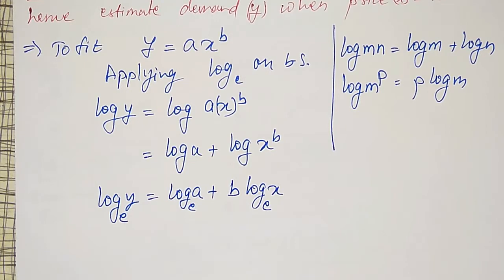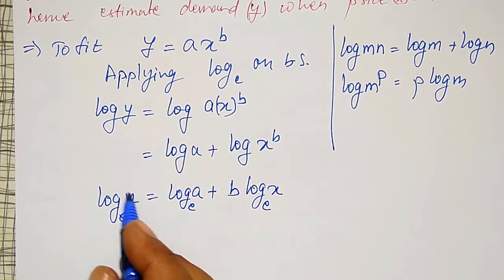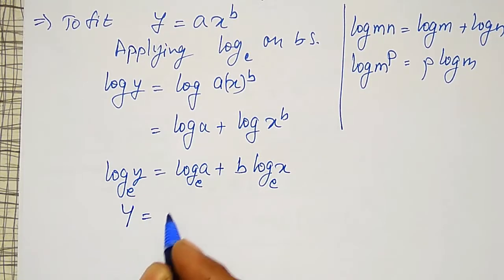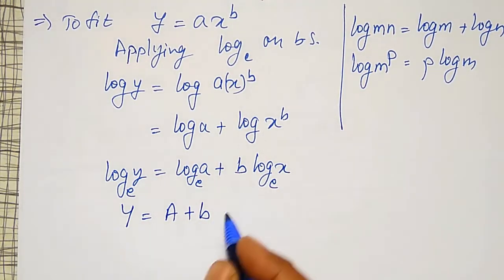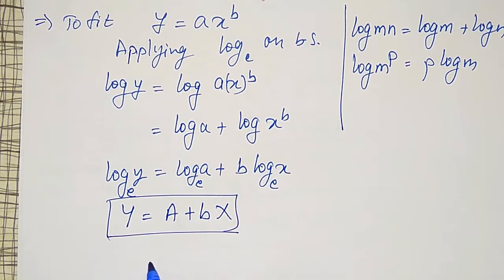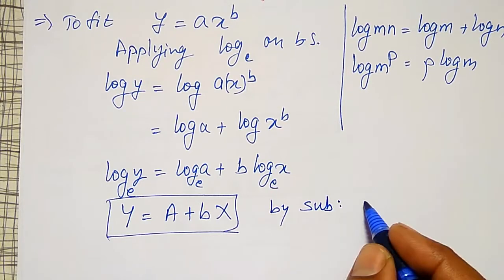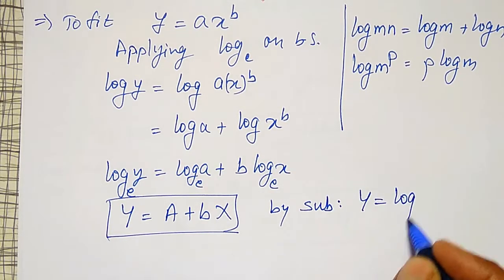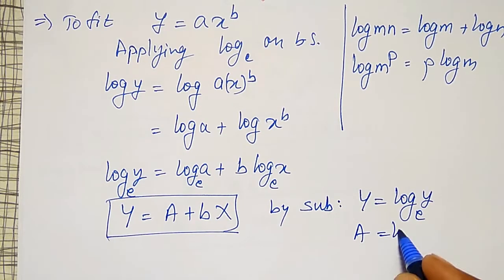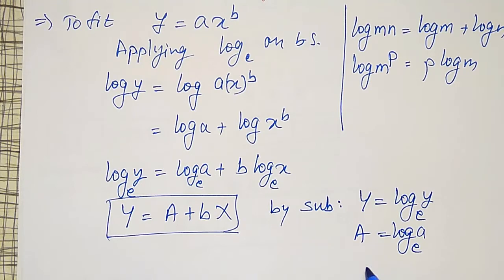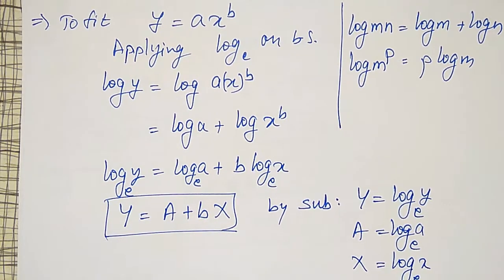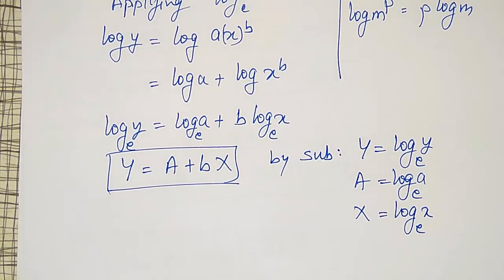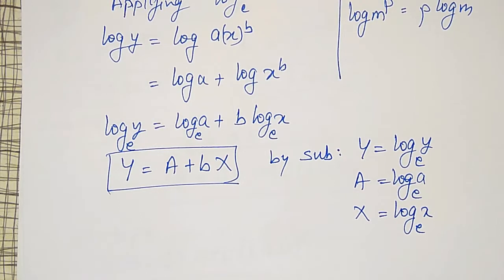This is not looking like a straight line, but I can write it in straight line form by substituting: capital Y equal to log y (base e), capital A equal to log a (base e), and capital X equal to log x (base e). This gives the equation capital Y equal to capital A plus small b into capital X — a straight line. For this, I have normal equations and can find small a and small b.